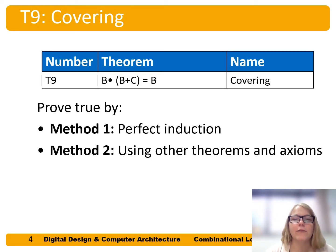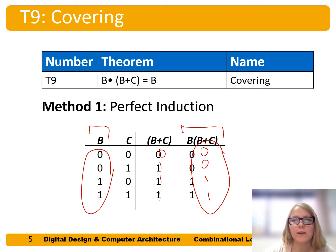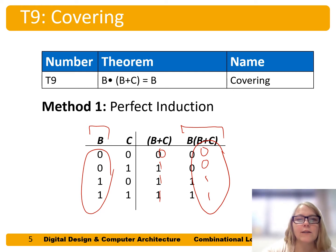Here's an example of the covering theorem, which we can prove by either method. We can look at both sides of the equation. Starting with the sub-term B or C, B or C evaluates to 0, 1, 1, 1 for those combinations of B and C. Then B and (B or C) is just this B column ANDed with the B or C column.